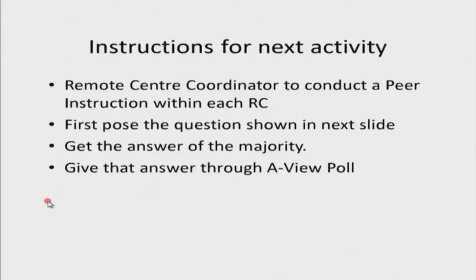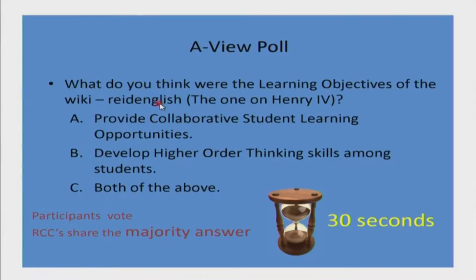We are going to conduct a peer instruction activity at the remote centers. The remote center coordinator should pose the question shown in the next slide, get the answer of the majority, and submit it through the poll. The question is: what do you think were the learning objectives of the wiki 'Read English' — the Henry IV wiki? Option A: provide collaborative student learning opportunities. Option B: develop higher order thinking skills among students. Option C: both of the above. You have 30 seconds to collect opinions.